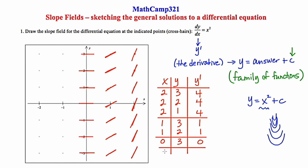Now I'll go to (-1, 3). If I square negative 1, I get 1, so we're back to slope 1 again — it should look the same as the x=1 column. All of these will be negative 1 squared, which is 1. I'm using the pattern established so I don't need to recalculate each time. And for x=-2, that's negative 2 squared which is 4, so these will be steep like the far right column.